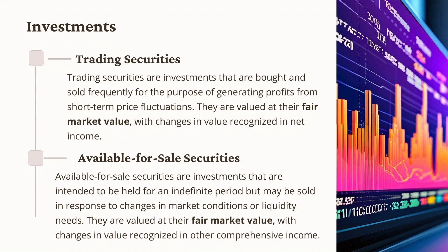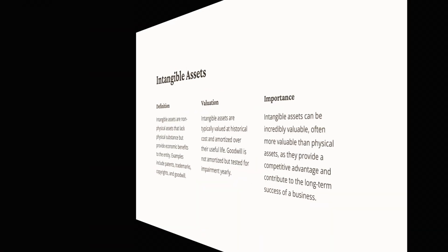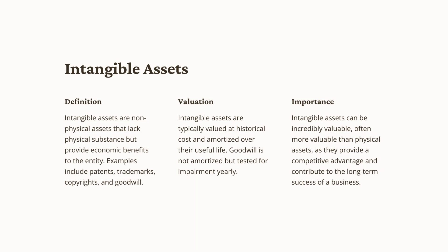The rationale for fair value valuation of securities lies in the existence of a readily available market, allowing companies to sell them quickly — consequently, the fair value represents the anticipated future economic benefit. Property, plant, and equipment are valued at historical cost minus accumulated depreciation. Depreciation represents the systematic reduction in the value of an asset over its useful life, aligning the cost of the asset with the revenues it helps generate and adjusting its value to represent the remaining future benefit. Intangible assets such as patents or trademarks are typically valued at historical cost and amortized over their useful life, similar to property, plant, and equipment. Goodwill, however, is not amortized but tested for impairment yearly.